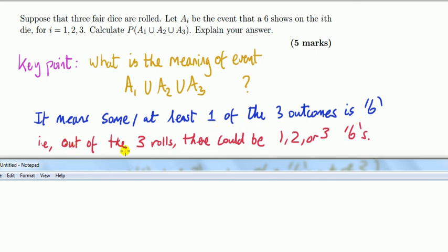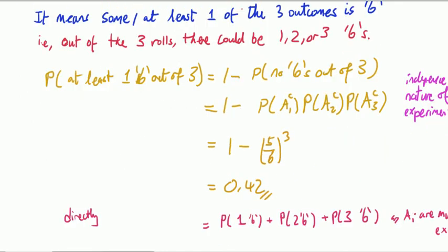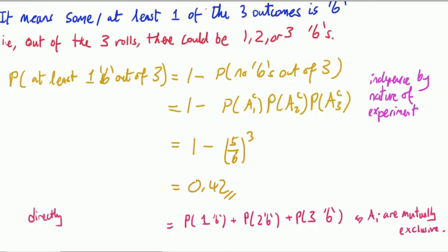Another way to put it: out of the three rolls, there could be one, two, or three sixes. So now we know what it means. Clearly we can use the result from above. At least one six out of three equals one minus no sixes out of three. Further, we can safely assume that these outcomes are independent, so this simplifies to the product of the events not occurring for each roll. And since this probability is five over six for each, and these probabilities are the same, it's just cubed. And that's the answer.